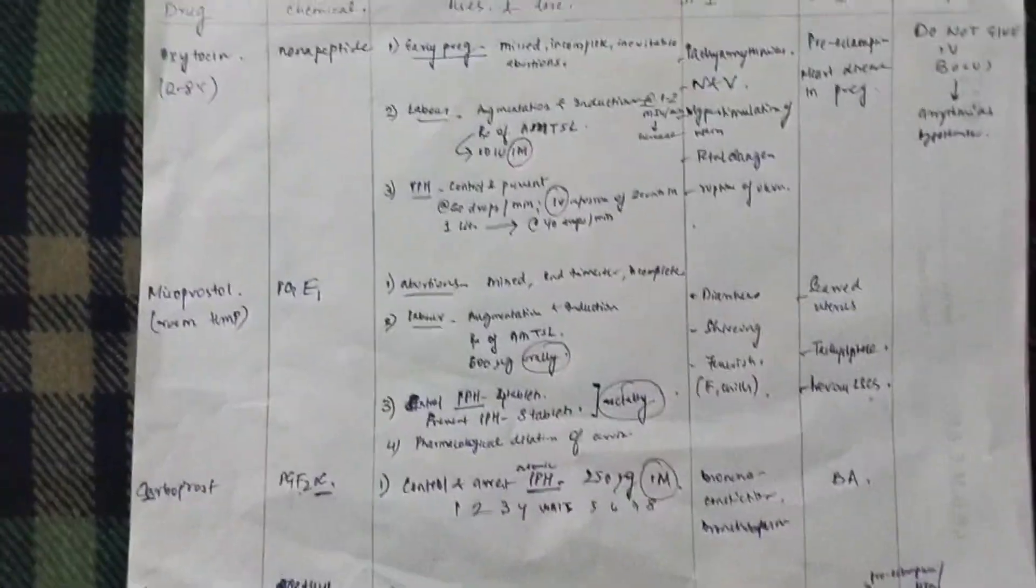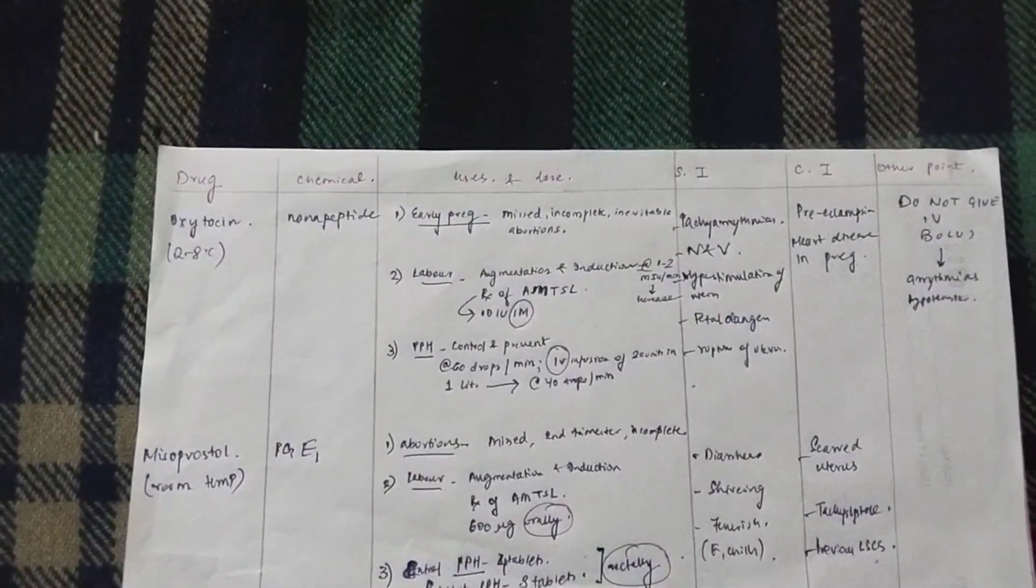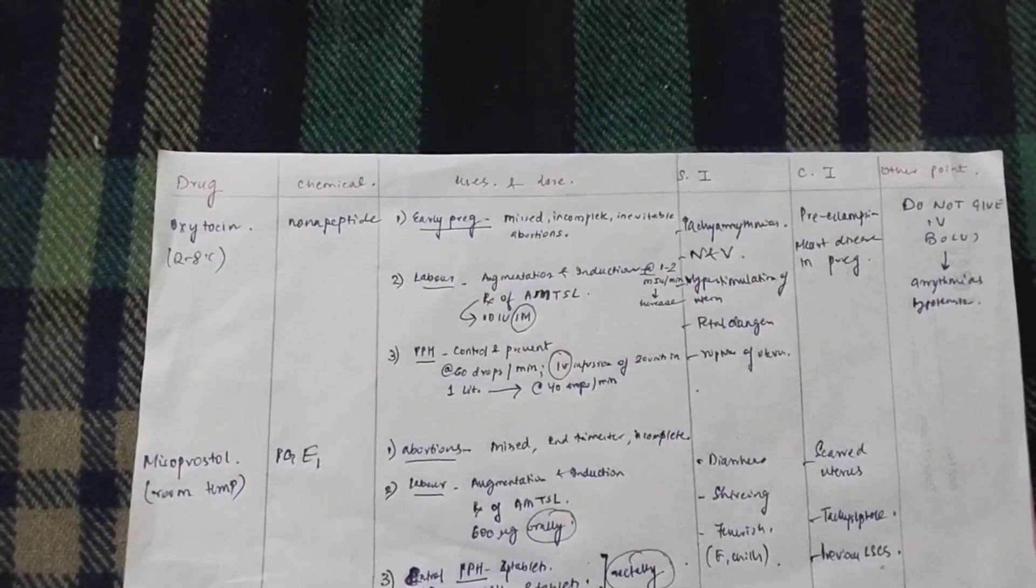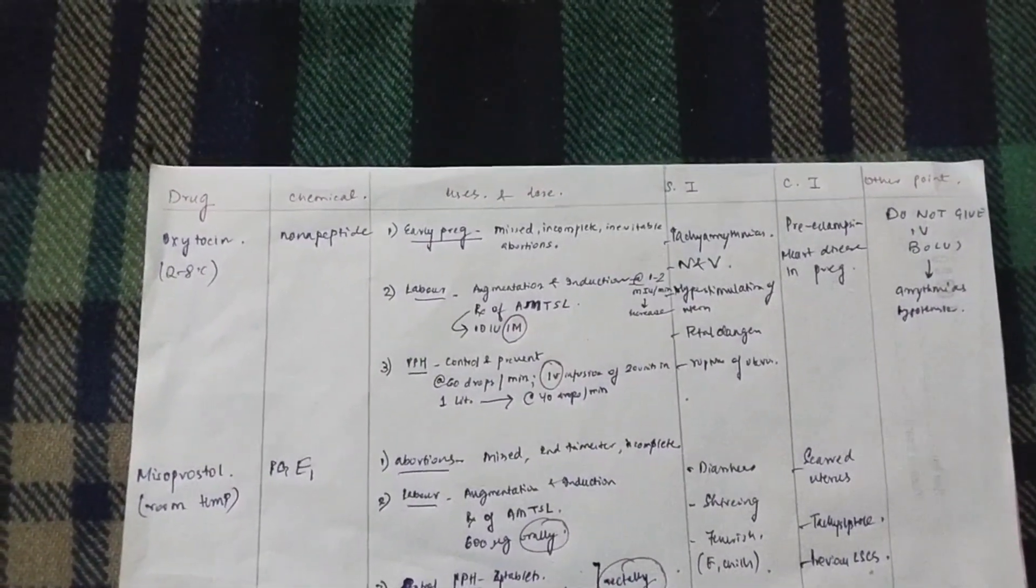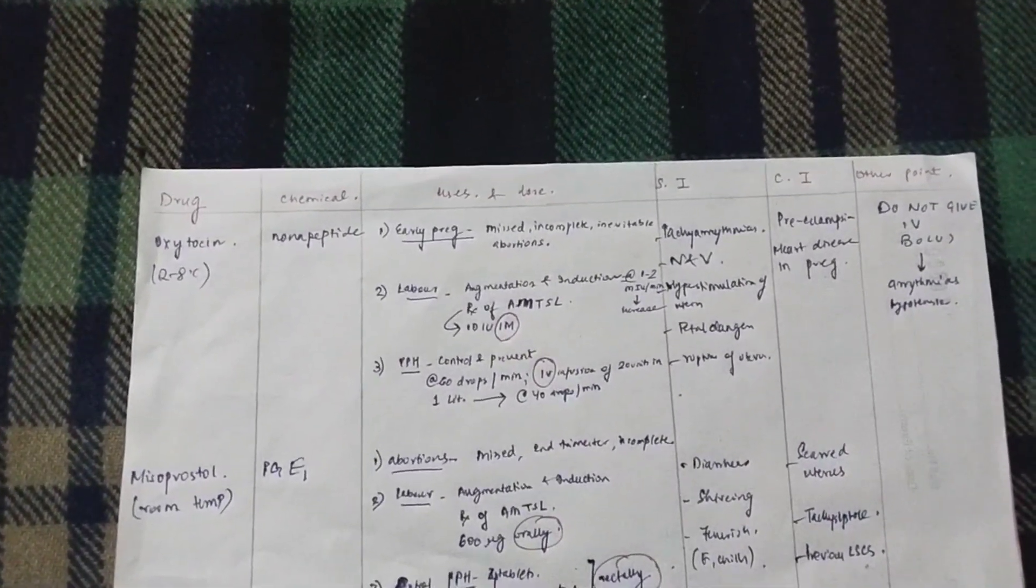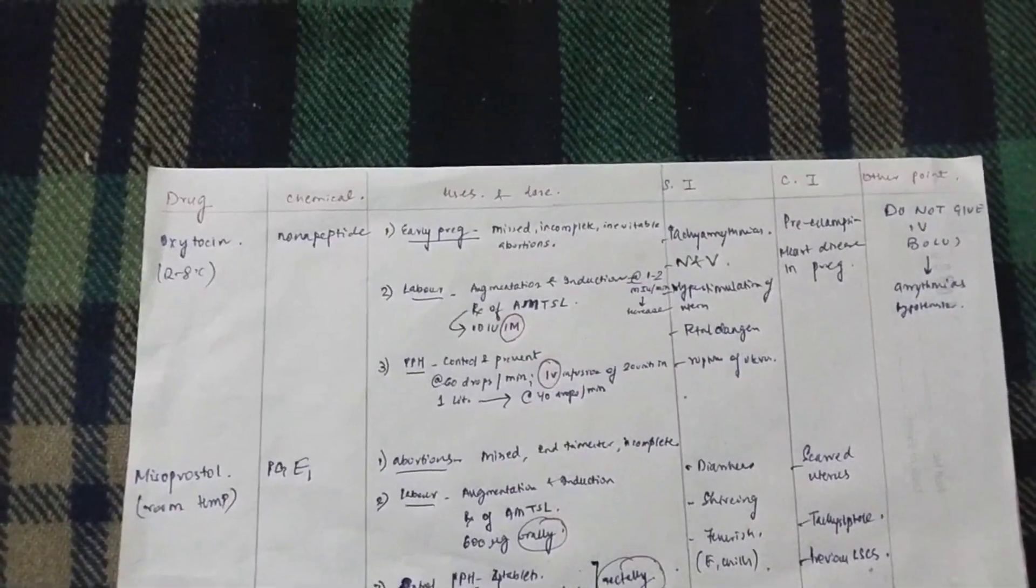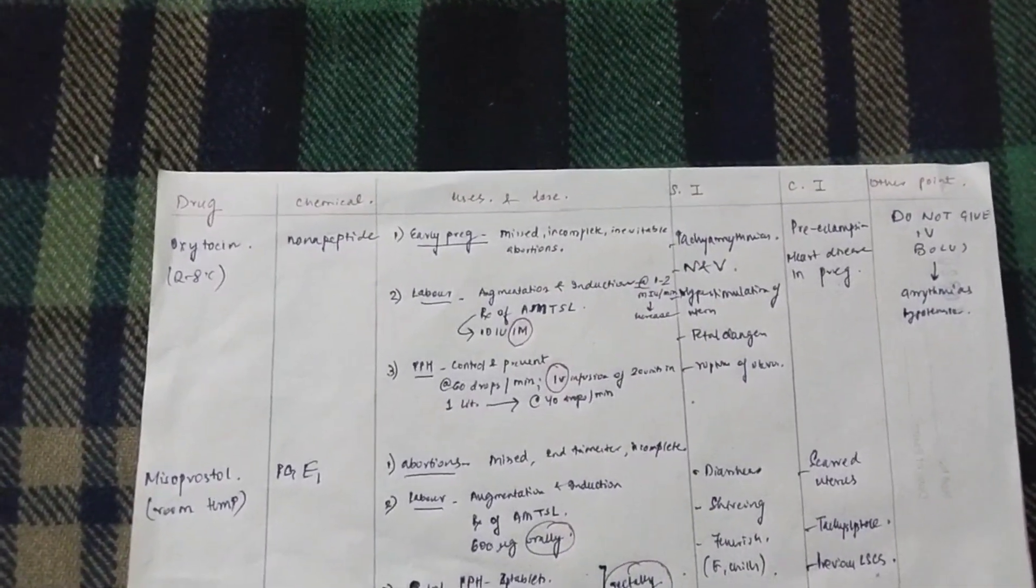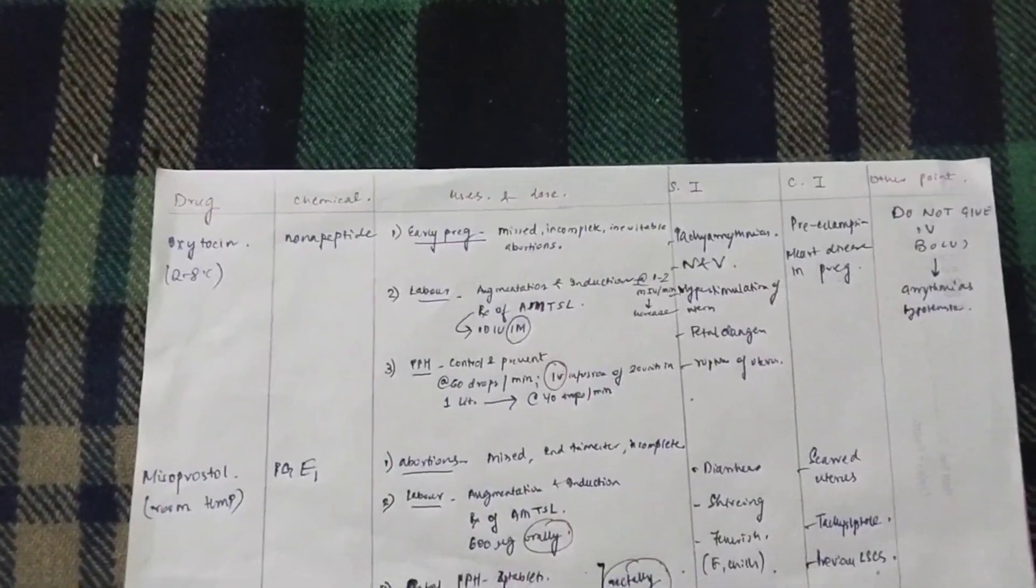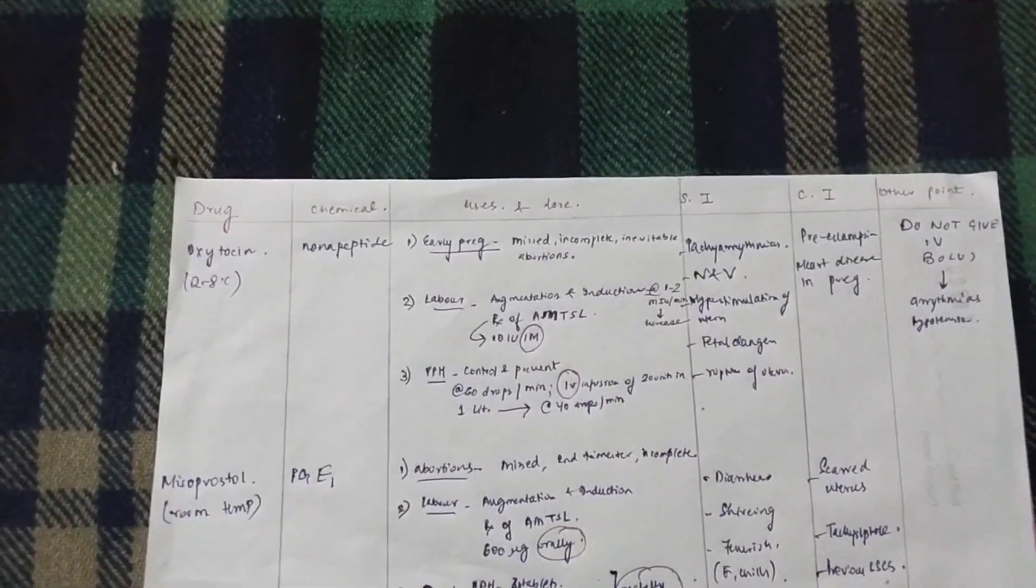All these drugs kind of have similar uses. That is, they are used in either abortions, either PPH, or labor. You overall know what are the uses. As I told you, three: abortions, PPH, and labor. Now, what is the particular significance of the drug? That you have to know. To know the details, you have to see the video.